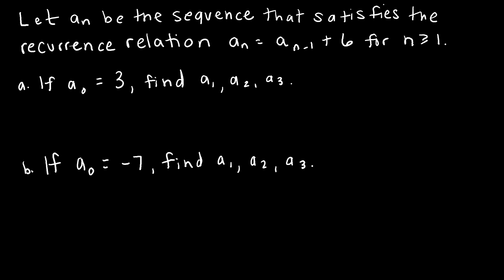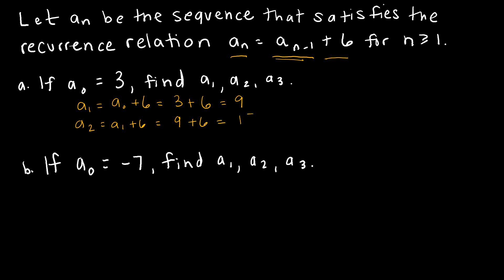It says: let a sub n be the sequence that satisfies the recurrence relation, and it tells me to find my value by taking the value before and adding six. So if I'm going to find a sub one, that says take a sub zero and add six to it, and a sub zero was three — so three plus six equals nine. A sub two is a sub one plus six; a sub one was nine, so nine plus six is 15. And a sub three is a sub two plus six, which is 15 plus six, which is 21.